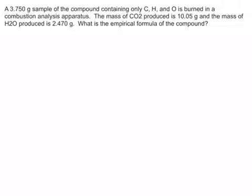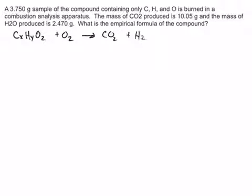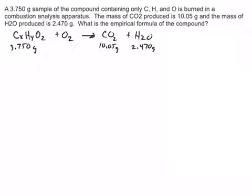In this question, we're asked to find the empirical formula of a compound that contains C, H, and O. We'll represent the numbers as X, Y, and Z, because we've been given a 3.750 gram sample of this compound. It's burned in oxygen, and what is produced is CO2 plus H2O. We need to figure out the moles of carbon, moles of hydrogen, and moles of oxygen.